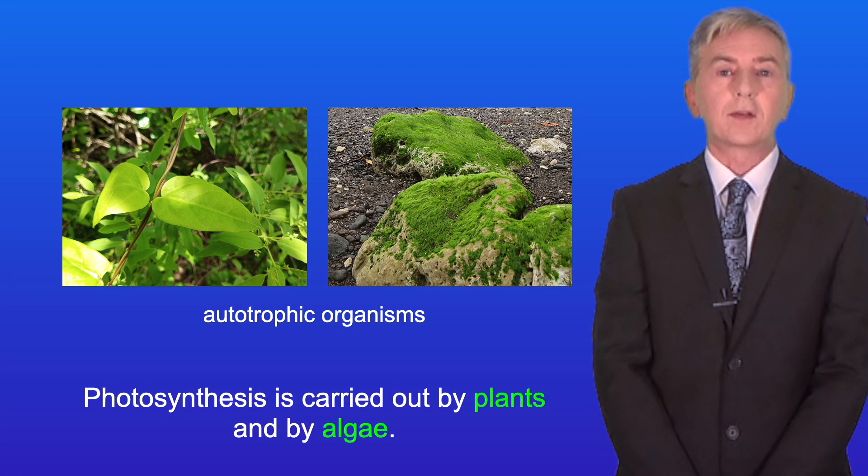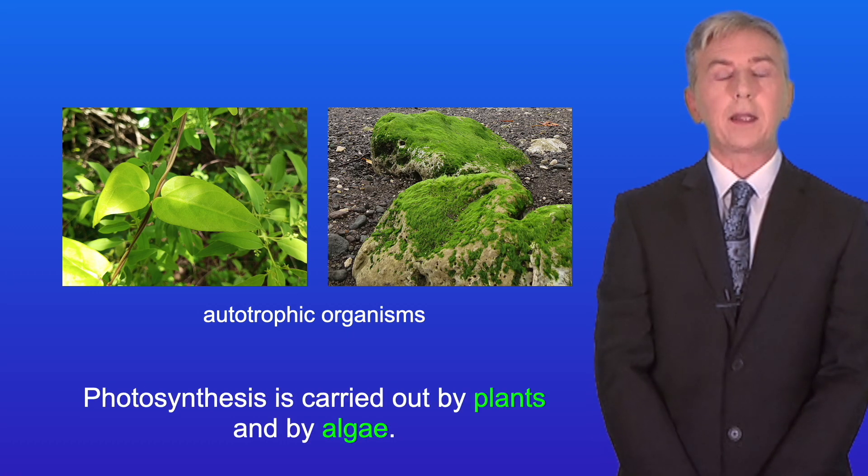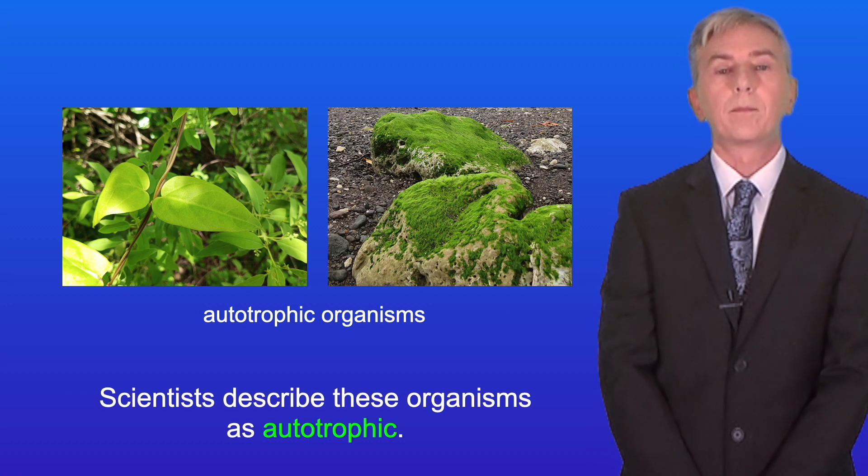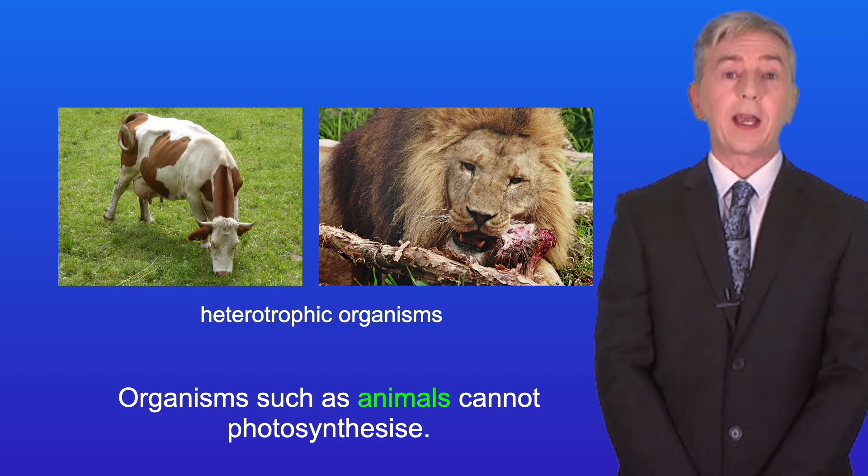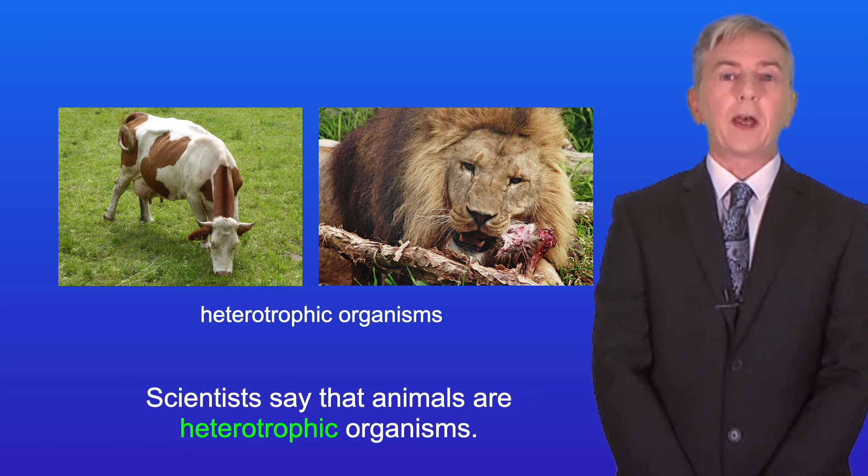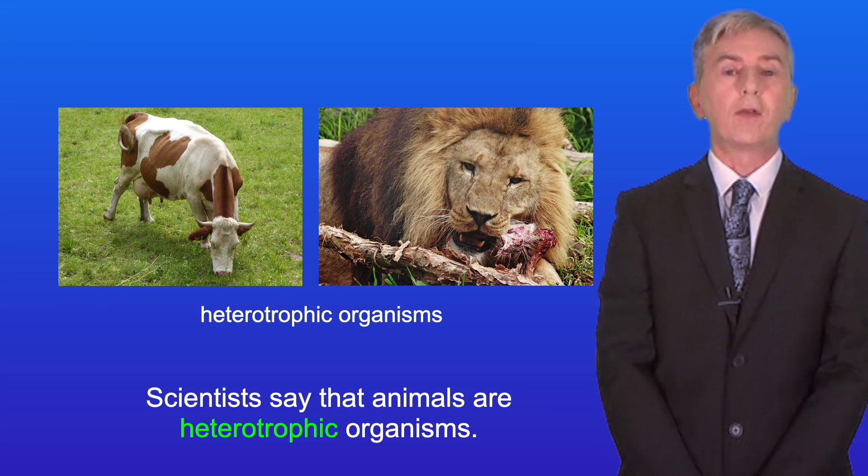Now photosynthesis is carried out by plants and by algae, and scientists describe these organisms as autotrophic. Organisms such as animals cannot photosynthesize. They get their nutrients by eating plants or other animals. So scientists say that animals are heterotrophic organisms.